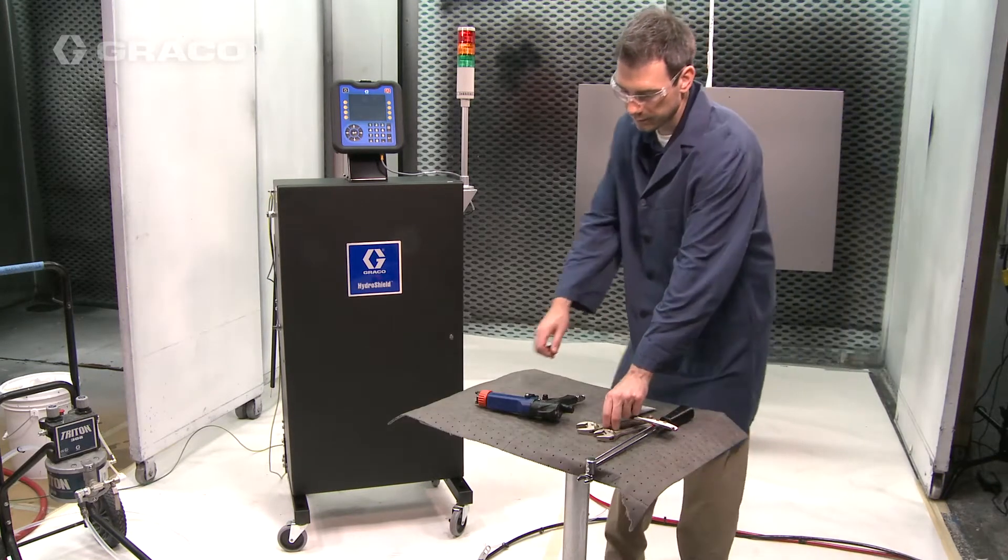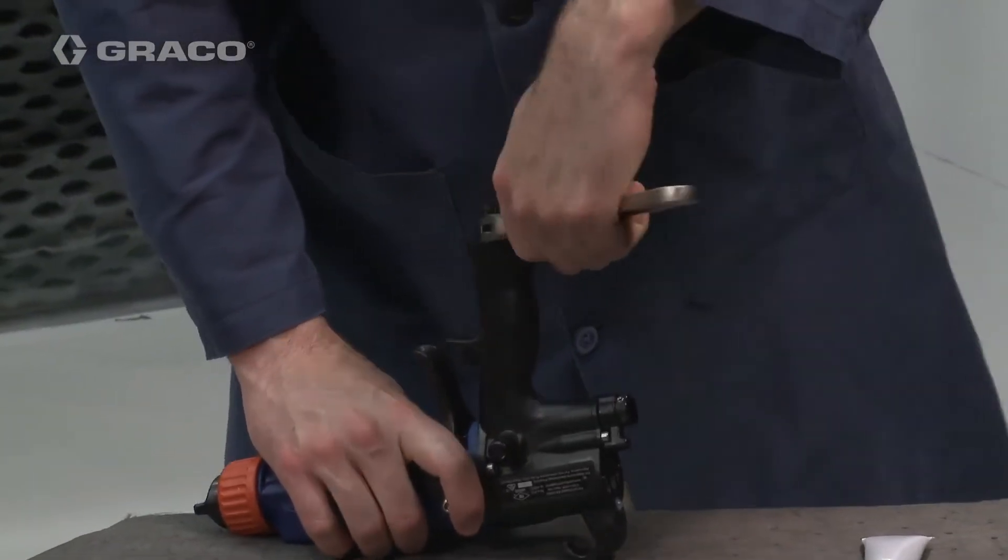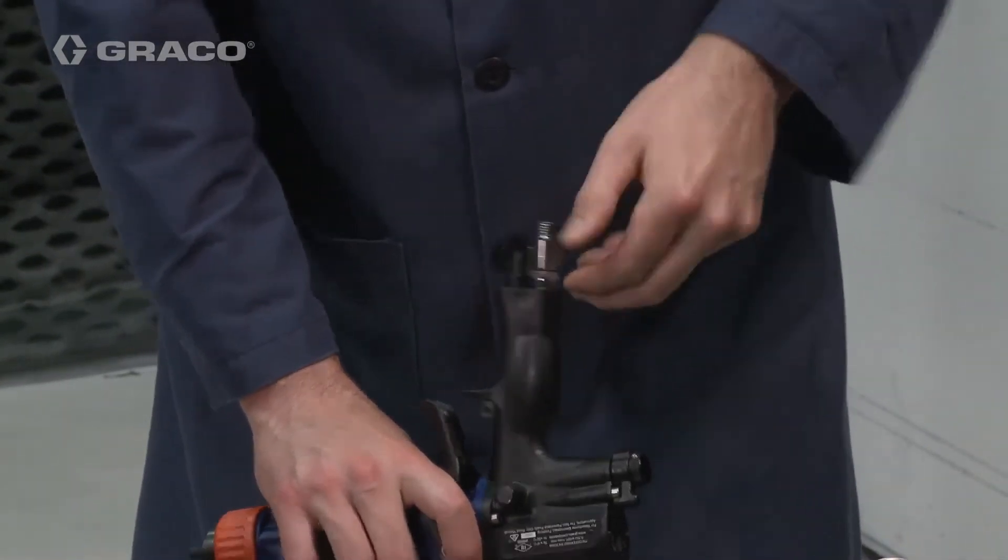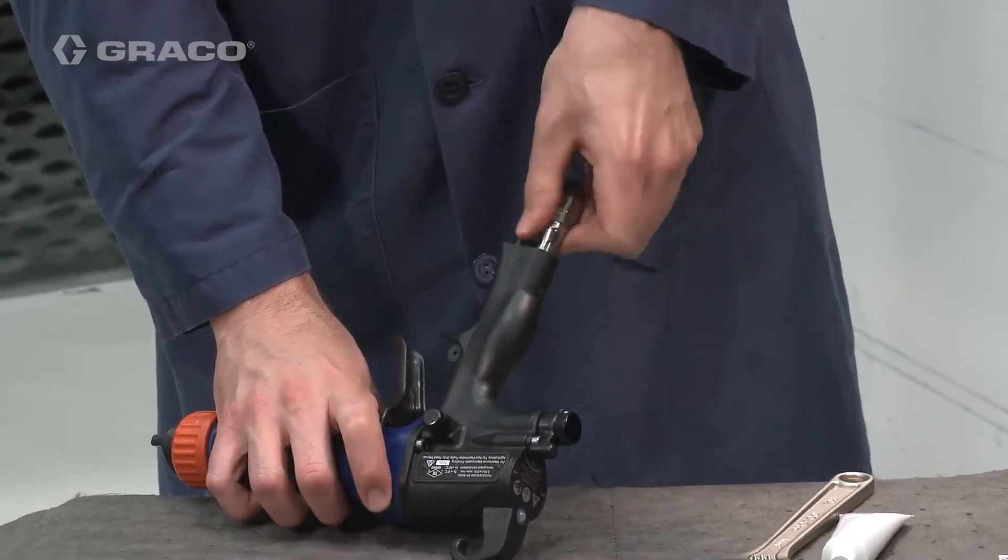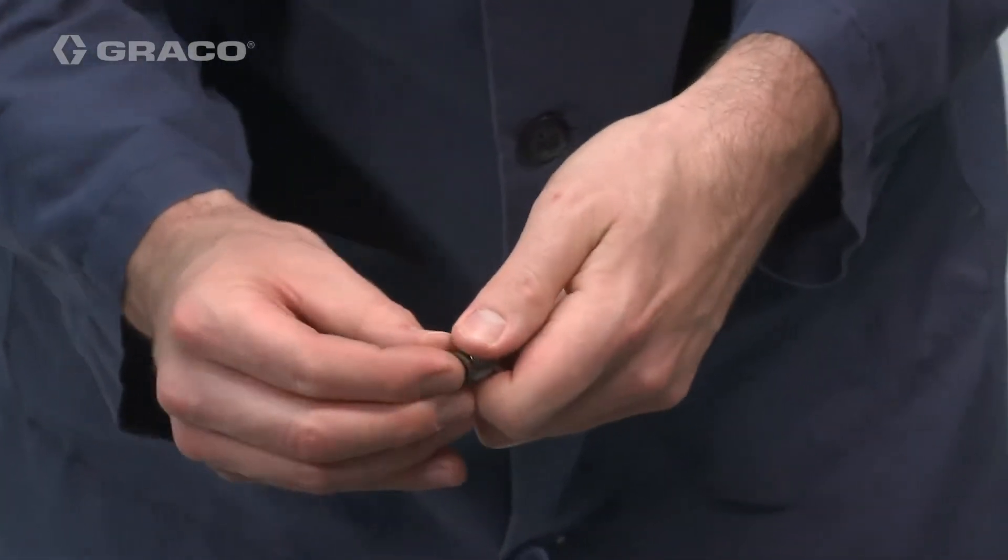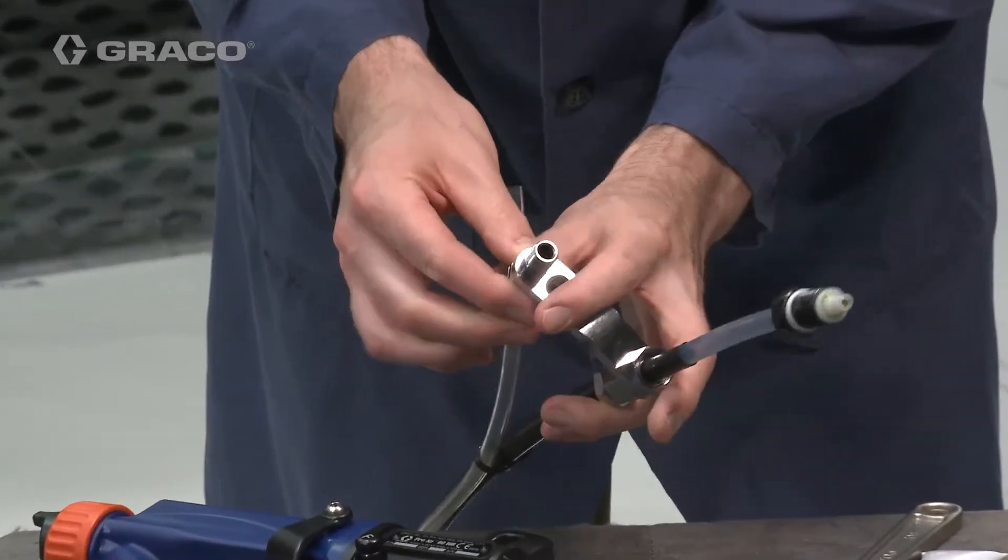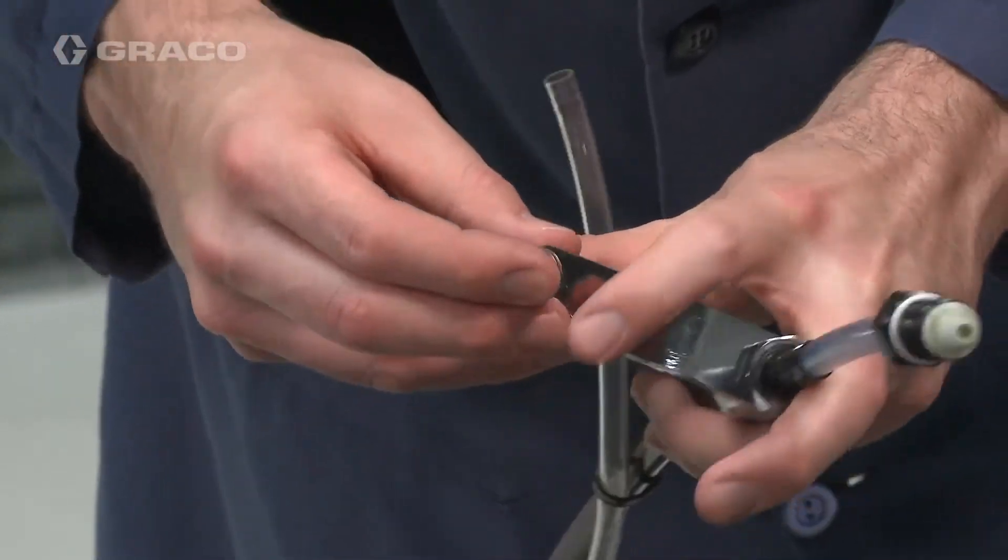Next, we are going to connect the fluid hose from the gun to the cabinet. We are going to start by removing the gun air inlet fitting, remembering that it is a left hand thread. Remove the o-ring and install the fitting through the bracket. Reassemble the o-ring.